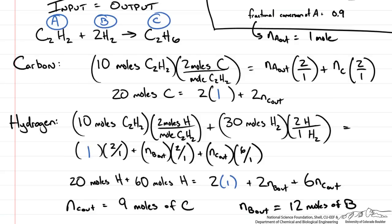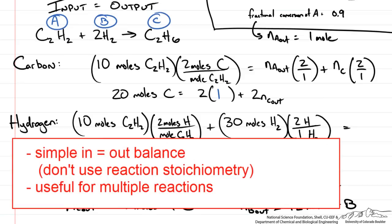We get the same answers as before: 1 mole of A out, 9 moles of C out, and 12 moles of B out. The atomic species balance gives the same results as the molecular species balance, as we would hope. This method is one of the most straightforward since it is really just input equals output. It can be written for each independent atomic species and is particularly useful when there are multiple reactions, making it one of the more commonly used methods.